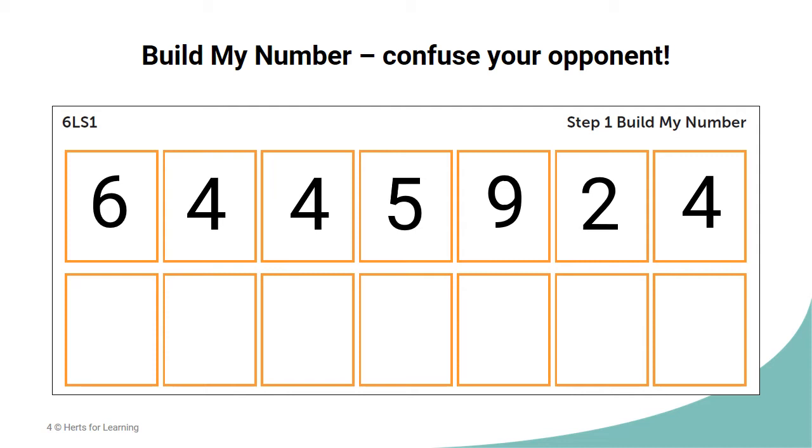Player B will need to keep track of this in order to build the new number being described. Player A should also write down their new number on their game board so that they don't confuse themselves.